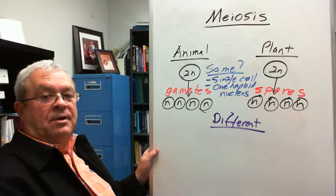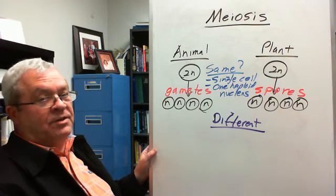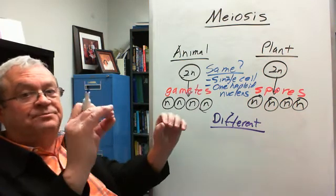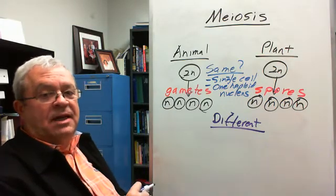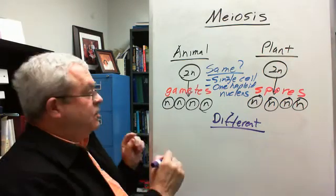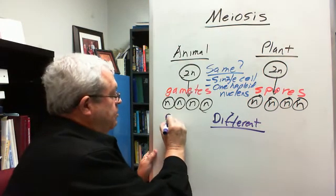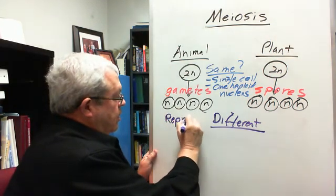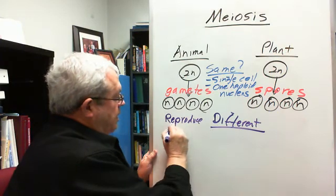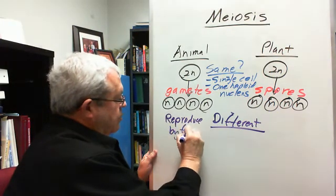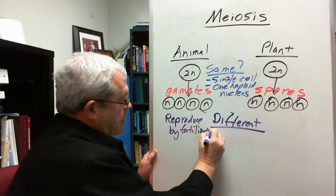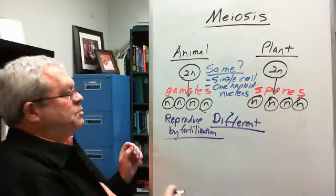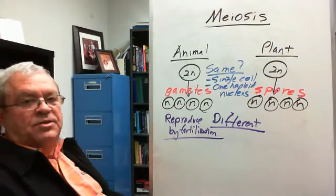And so, how do gametes reproduce? Well, we sure know. Excuse me. Male gamete finds a female gamete, right? What's that called? Fertilization. And so, these reproduce by fertilization. Reproduced by fertilization. That's how gametes do it.